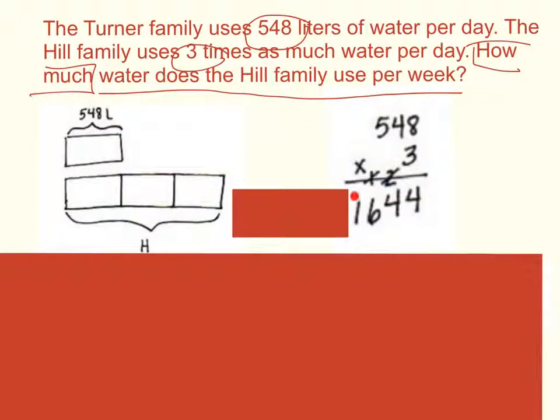So our final product would be 1,644. This is the amount of water the Hill family uses per day. Now I need to know how much does the Hill family use per week. So I'm going to take this number, and I know that there's 7 days in a week. So 1,644 times 7.